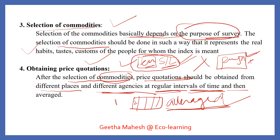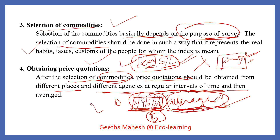Prices are collected from different places — for example, 2 rupees, 4 rupees, 6 rupees — and these prices differ across locations. The total is divided by the number of observations to get an average price, which is then used to calculate the index number.